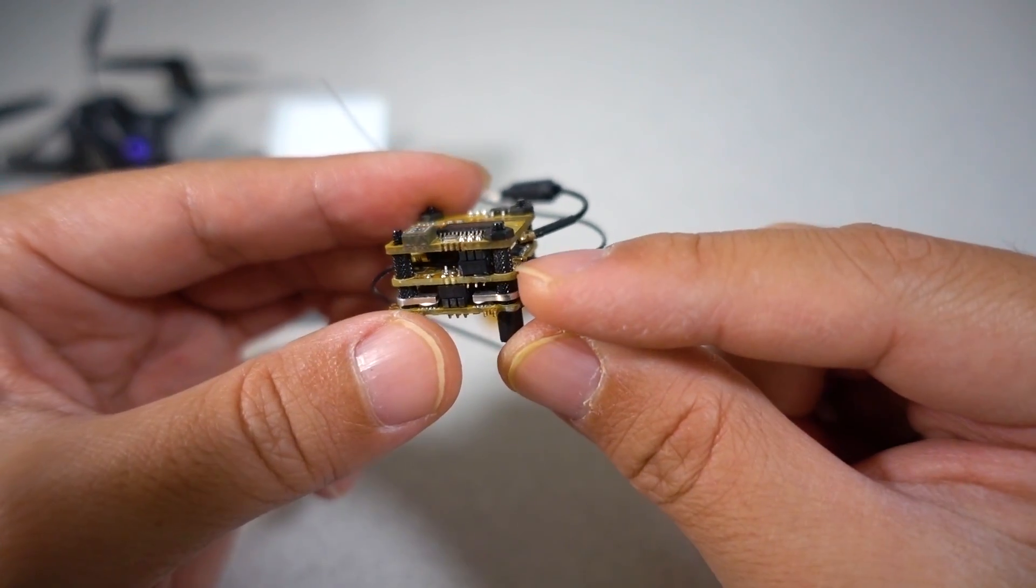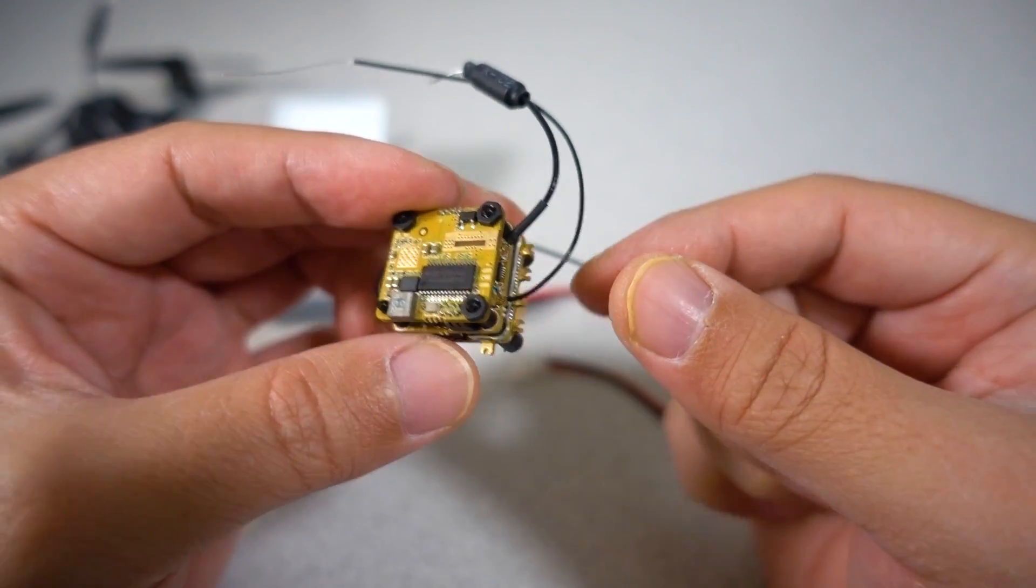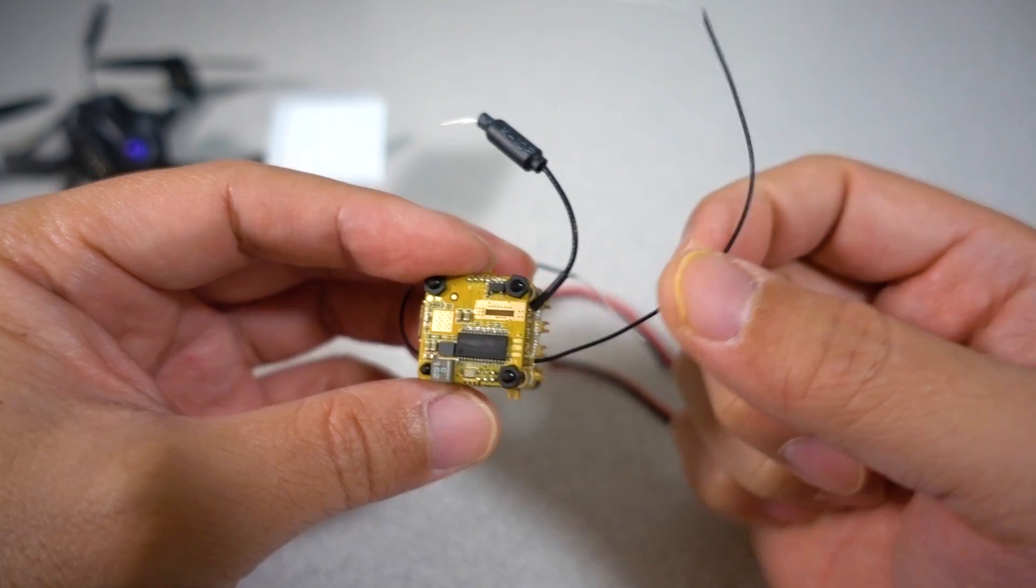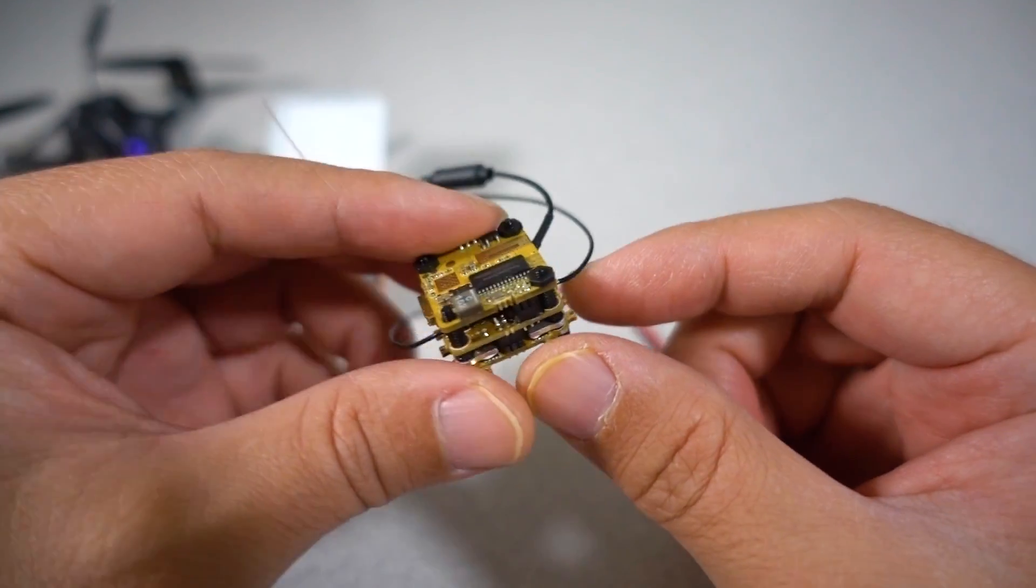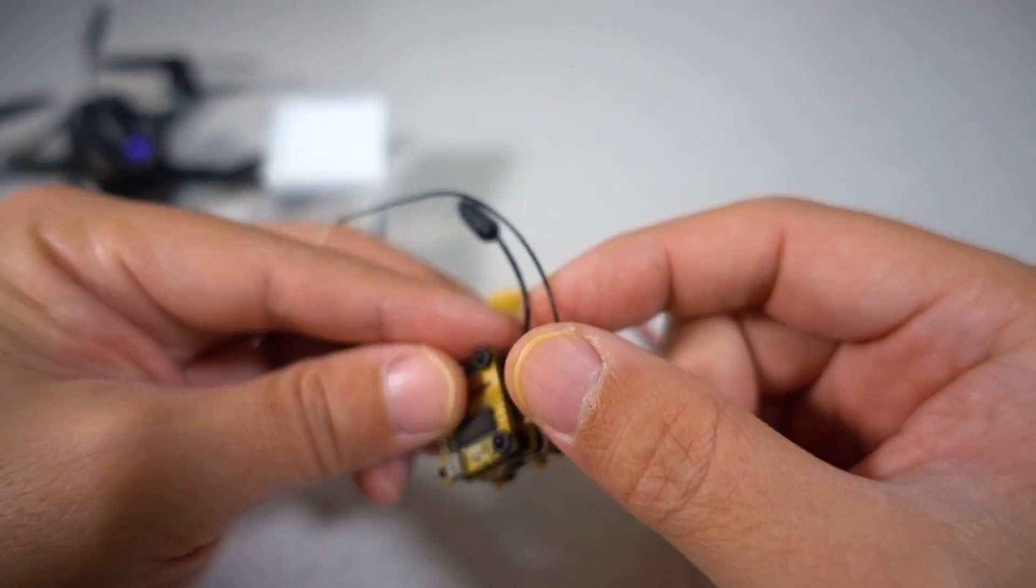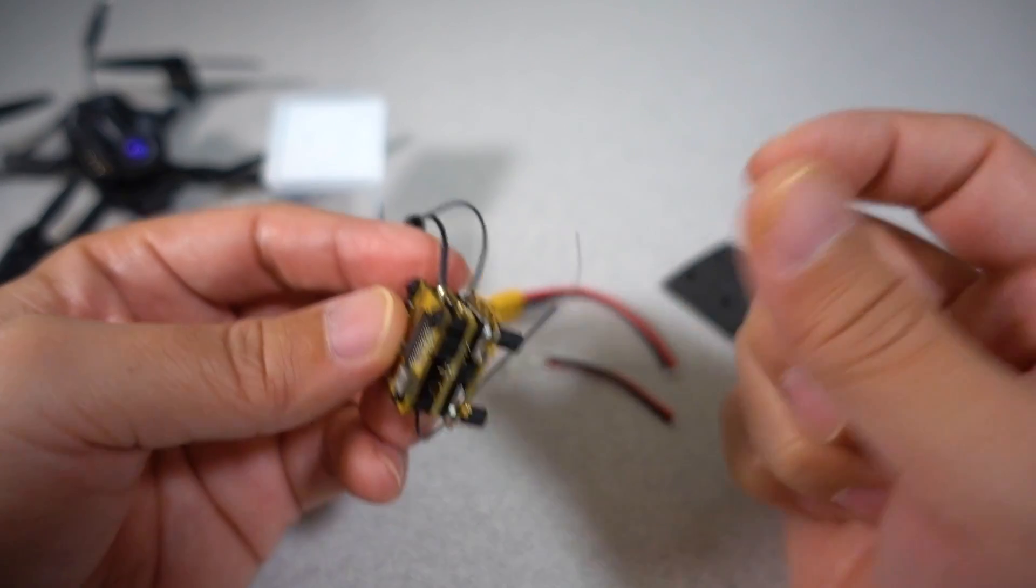And then you have a flight controller, F4 flight controller, with a built-in FreeSky SPI receiver with diversity antenna. So you have one antenna here, and it's a FreeSky receiver,